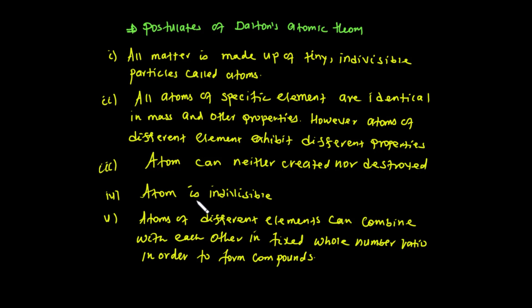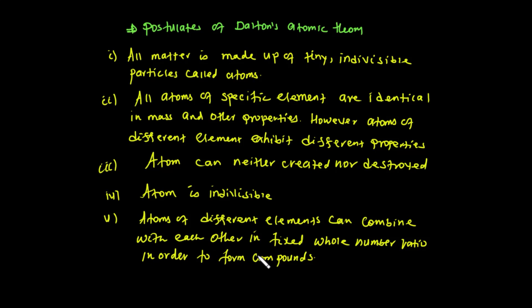Atom is indivisible — it cannot be subdivided into electron, proton, and neutron according to Dalton. Atoms can neither be created nor destroyed. And atoms of different elements can combine with each other in a fixed whole number ratio in order to form compounds.